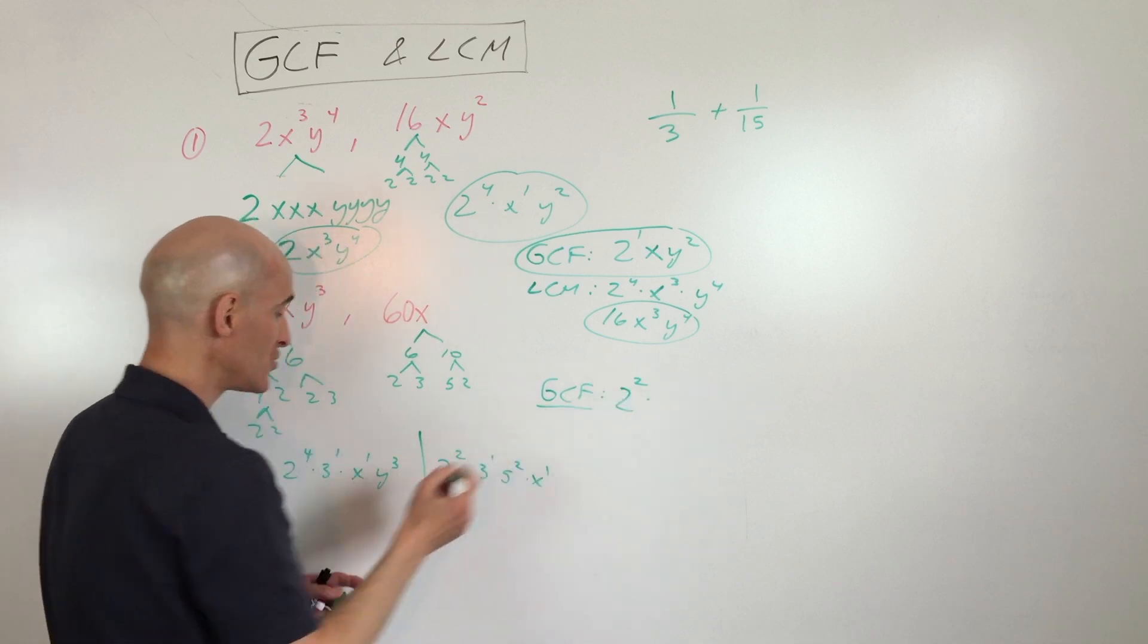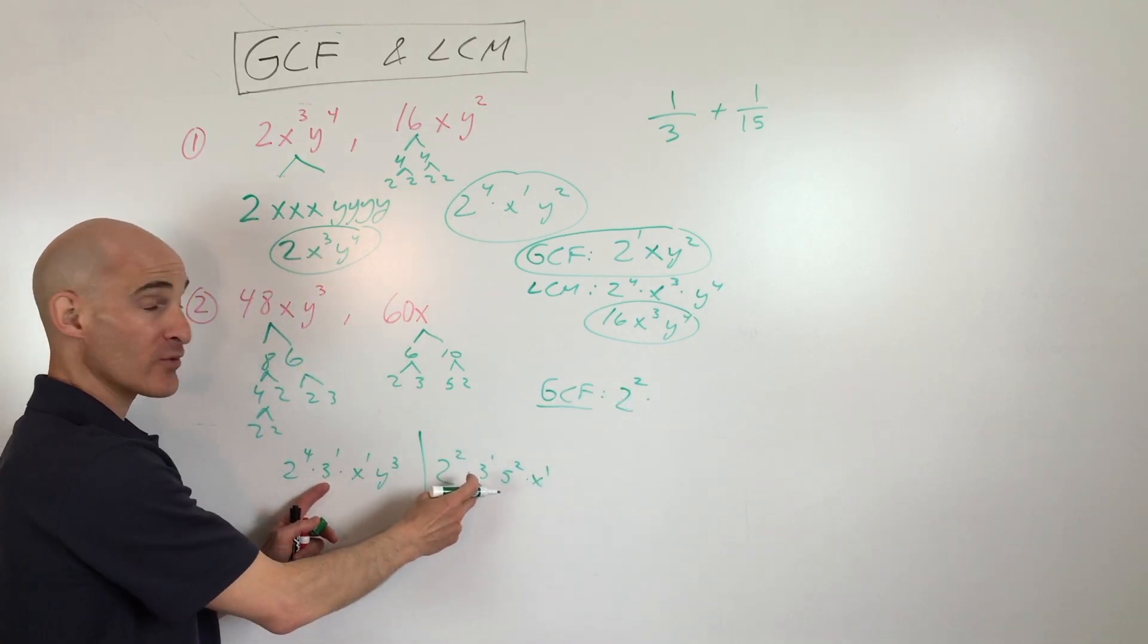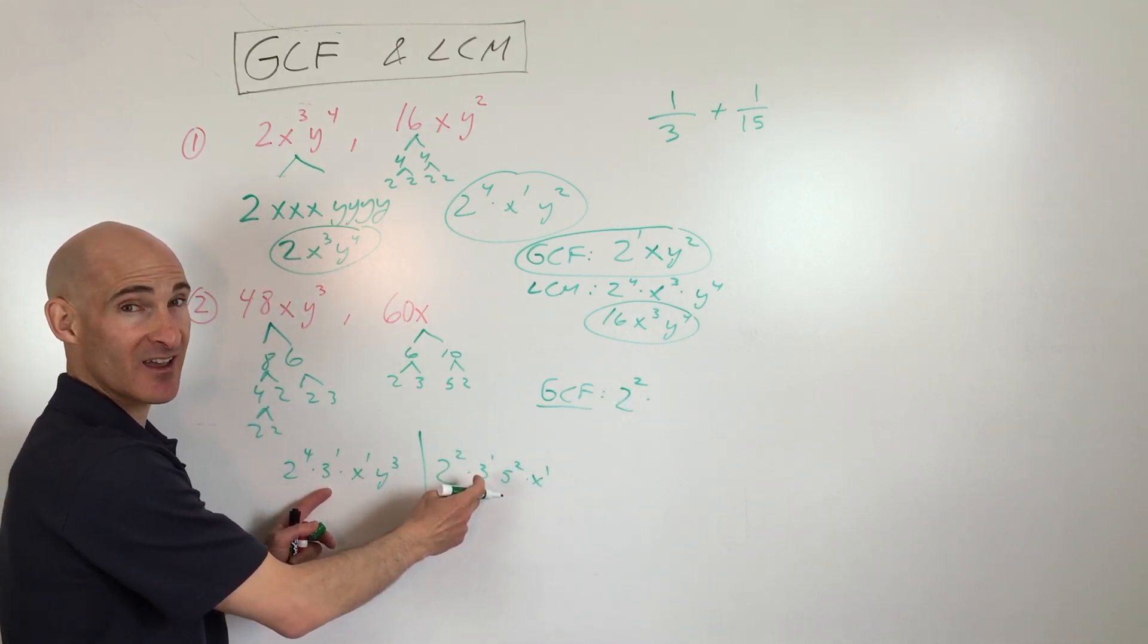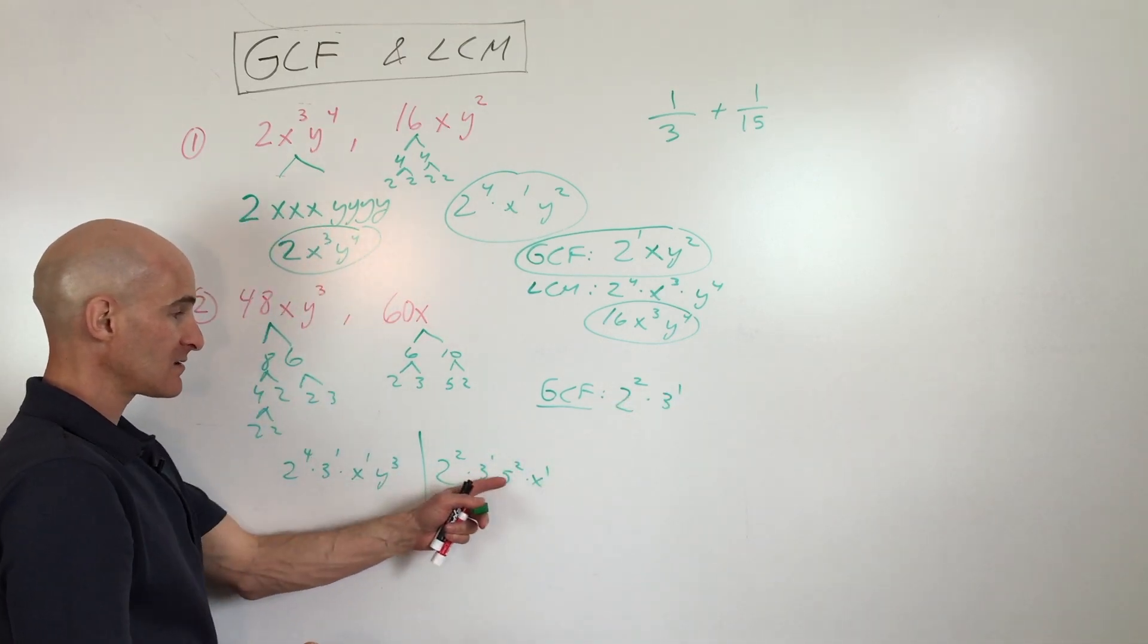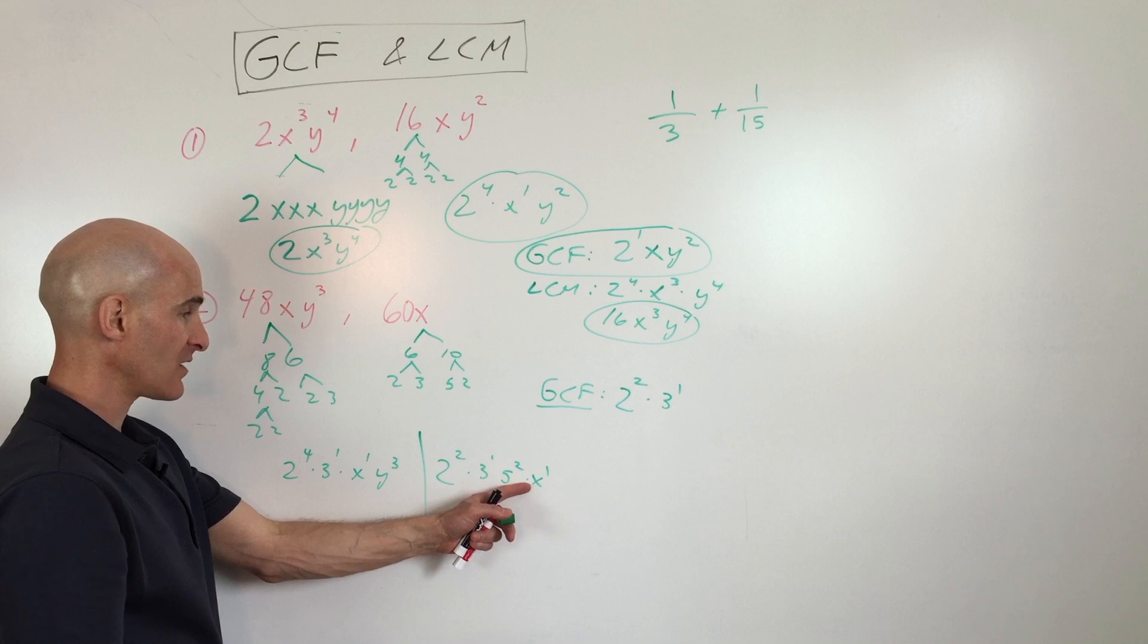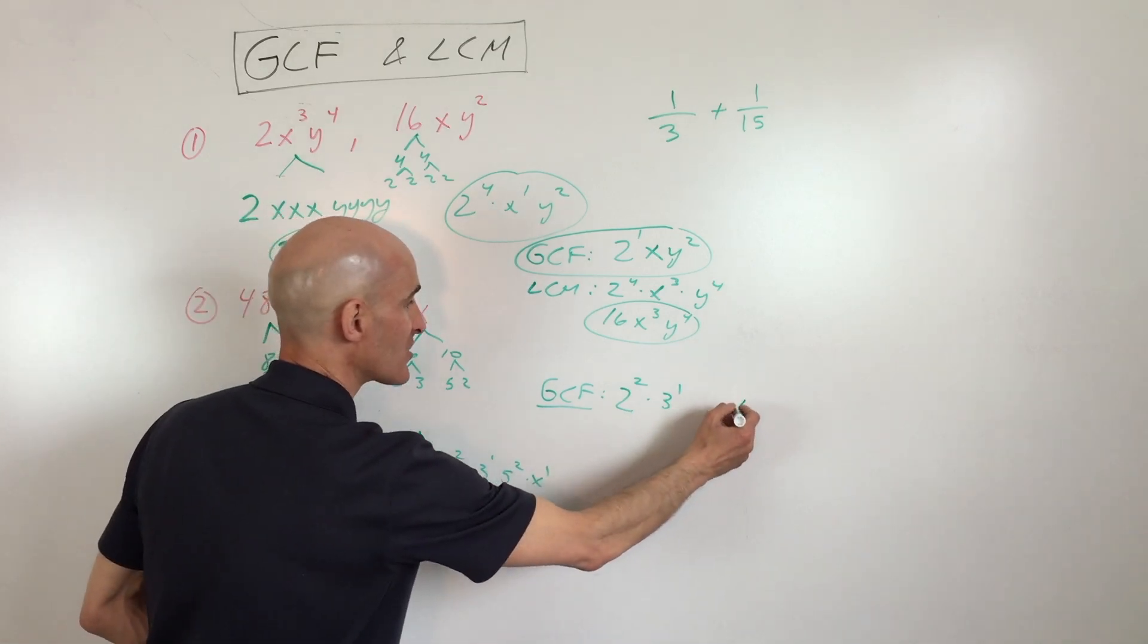We only are going to use 2 twos. We have 1 three, 1 three, it's a tie. What do you do in the case of a tie? You just use 1. And then we have 1 x and 1 x. Which we're just going to take whichever occurs less, that's x.